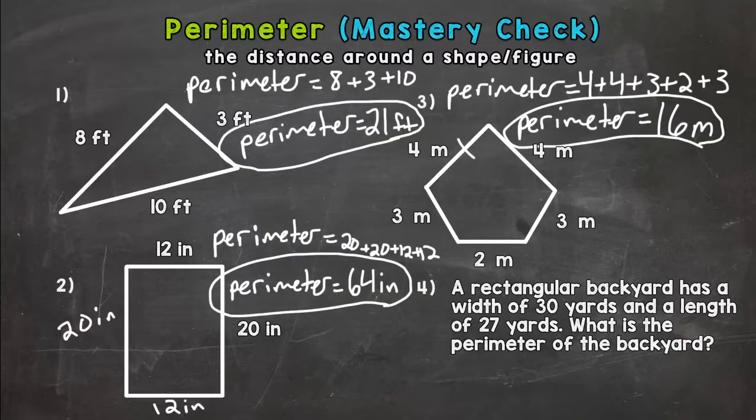Number four, we have our word problem. A rectangular backyard has a width of 30 yards and a length of 27 yards. What is the perimeter of the backyard? So I'm going to draw a picture here. It's almost a square, all the sides are almost the same, but the length is three yards longer, so a little bit longer here.